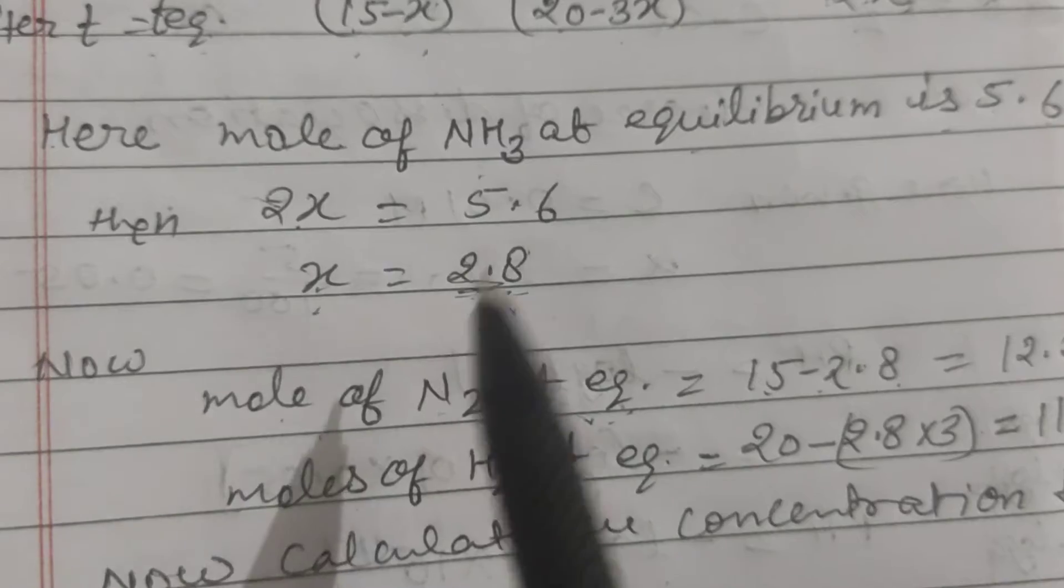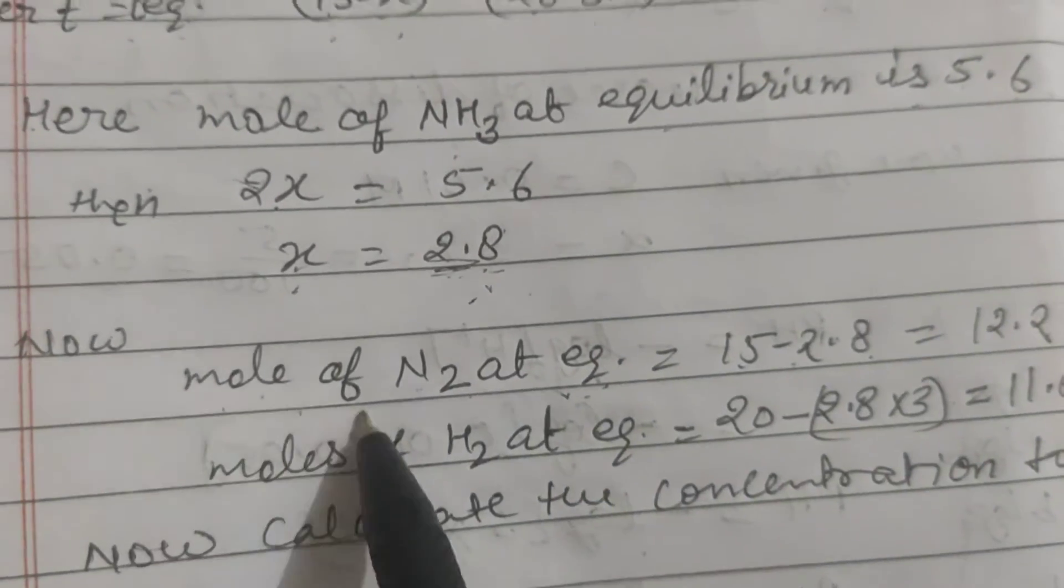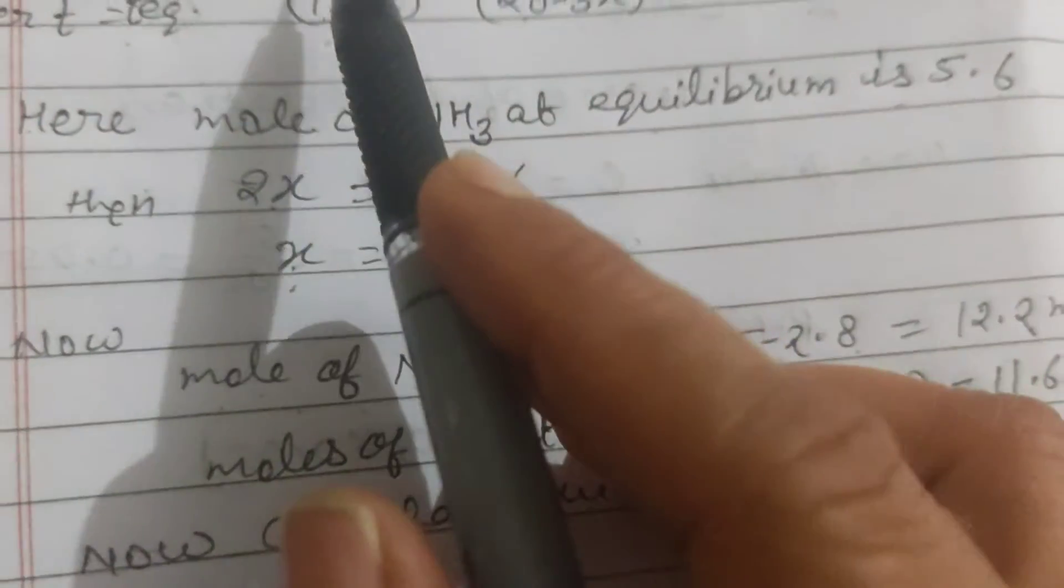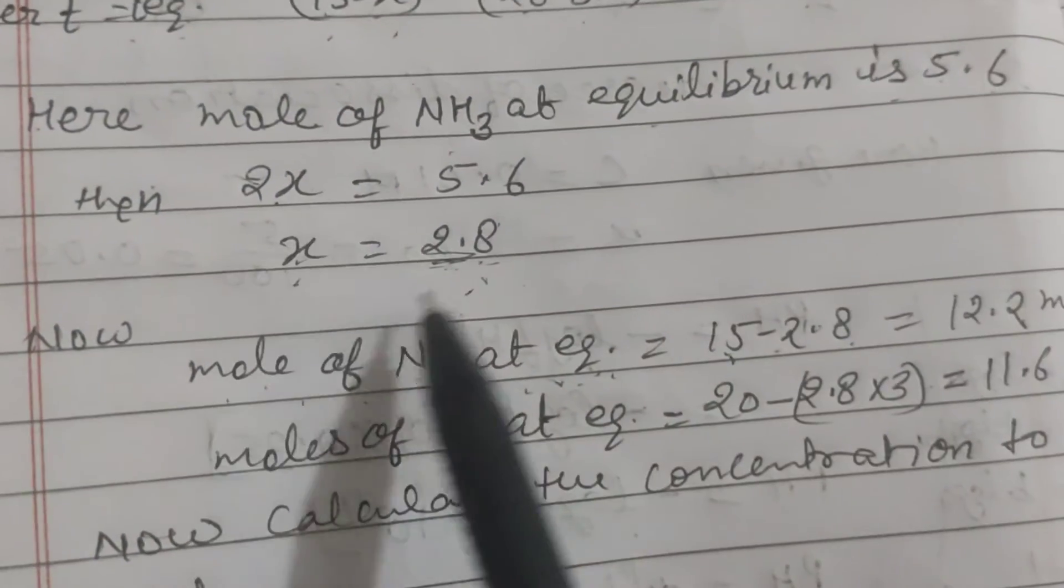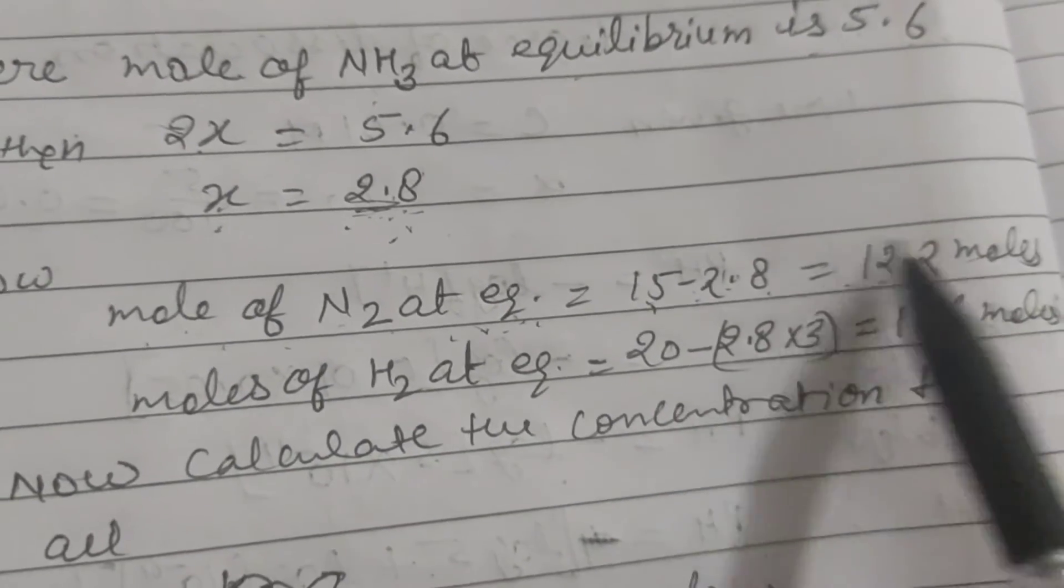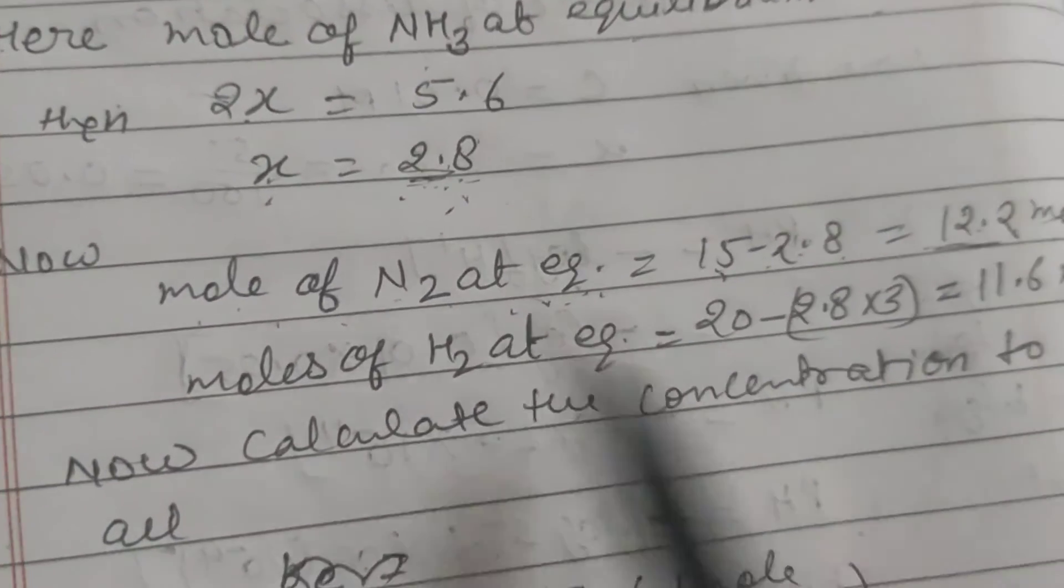So we have to find the moles of each constituent at equilibrium. Moles of N2 at equilibrium, that's 15 is given here, and we have found the moles consumed is 2.8. If you calculate it, you will find approximately 12.2 moles.